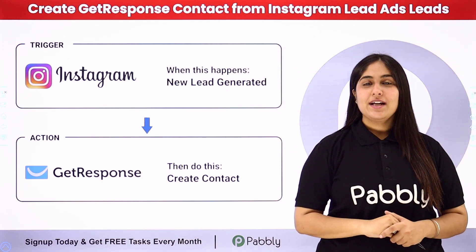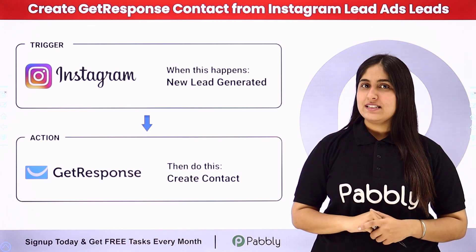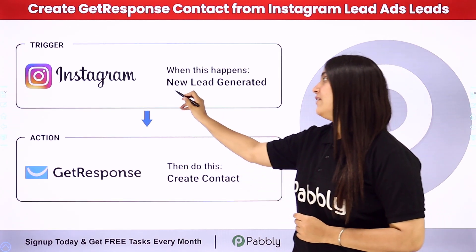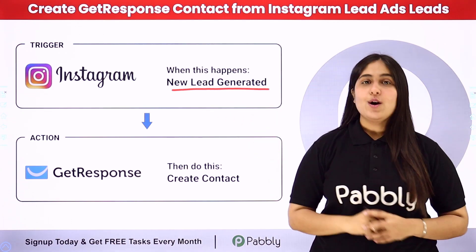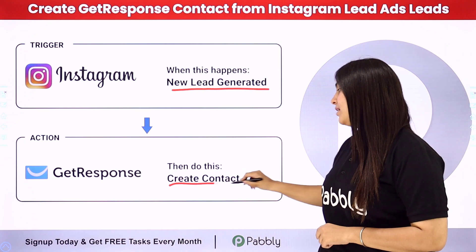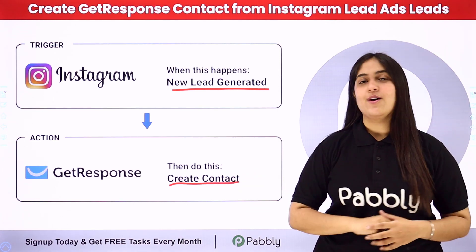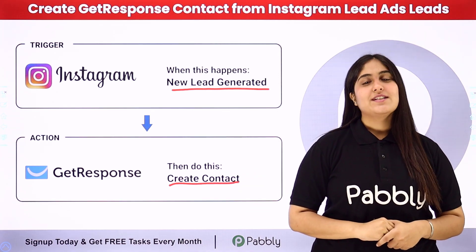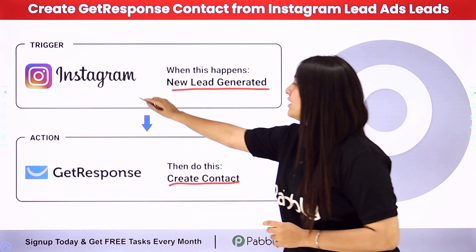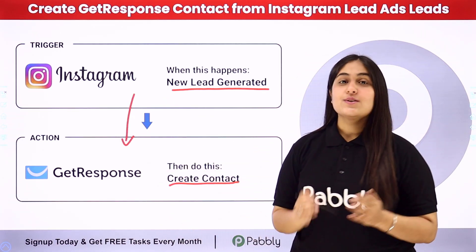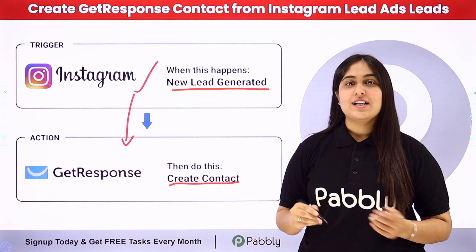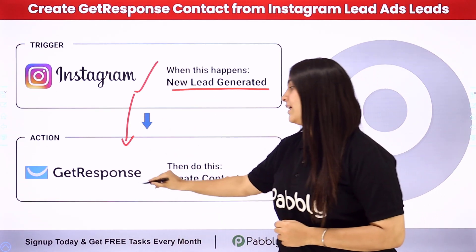I am running a business and to promote it I am running an Instagram lead ad. Whenever a new lead is generated, I want a new contact to be automatically created in my GetResponse account. To automate this process we will use Pabbly Connect, where our trigger application will be Instagram Lead Ads and our action application will be GetResponse.